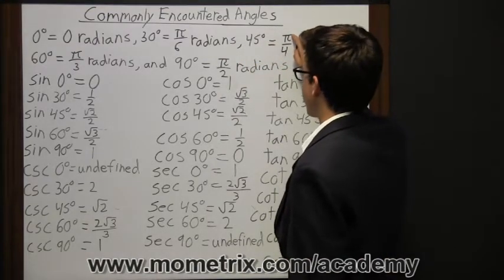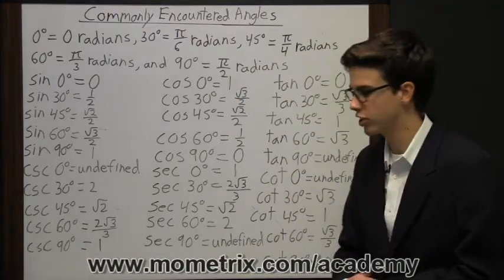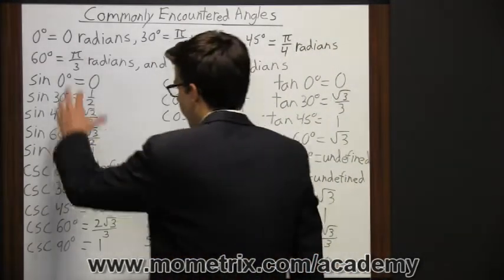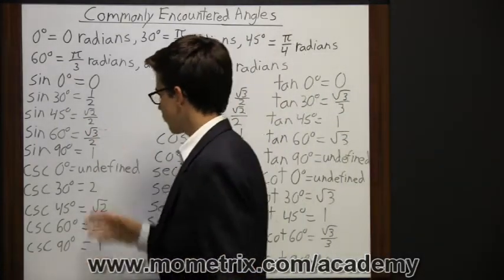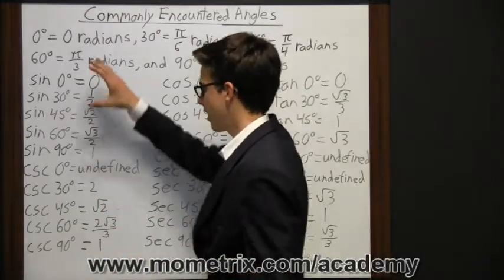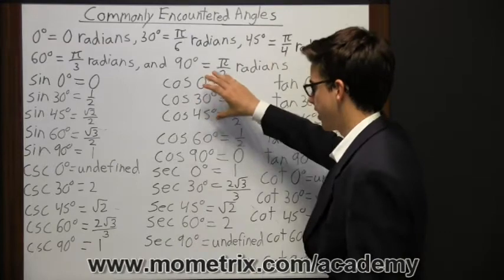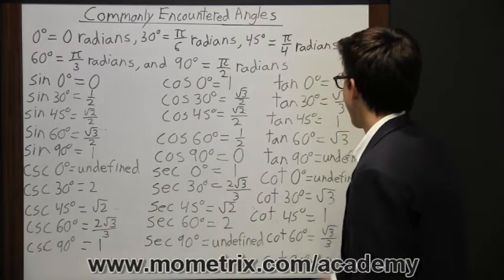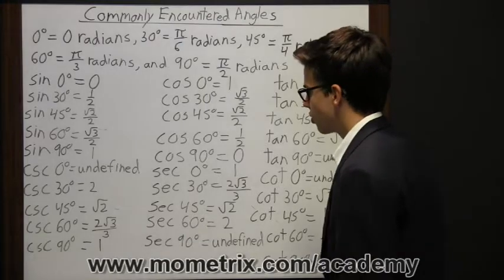We do skip pi over 5, but if you can kind of remember that pi is always going to be in the numerator and the only thing changing here is the denominator, that should be helpful to you. Now from here we have three columns. In each column we have a trigonometric function and then its reciprocal. So here we have sine and its reciprocal cosecant, then we have cosine and its reciprocal secant, and then we have tangent and its reciprocal cotangent.